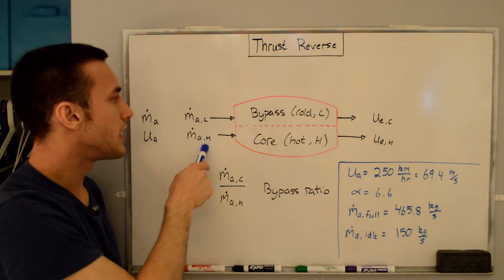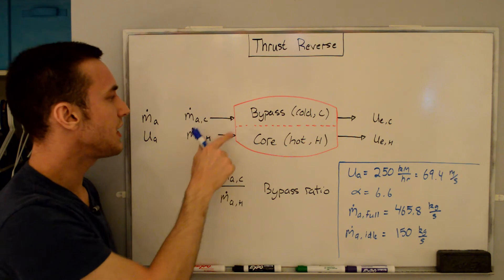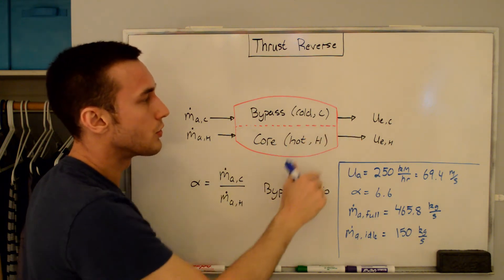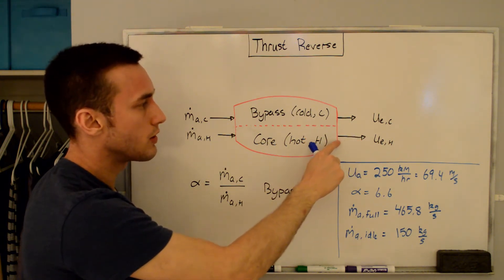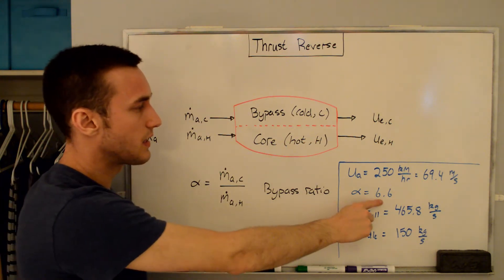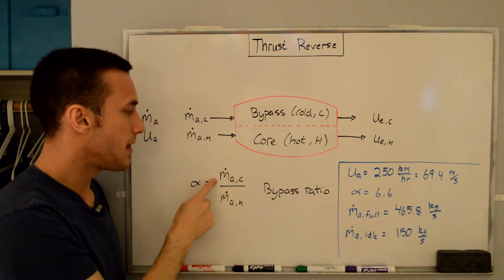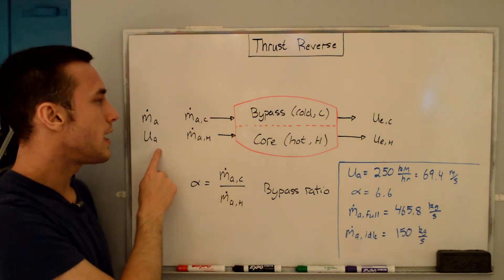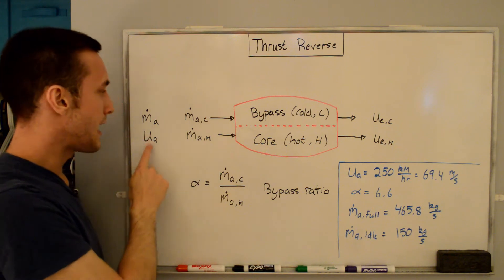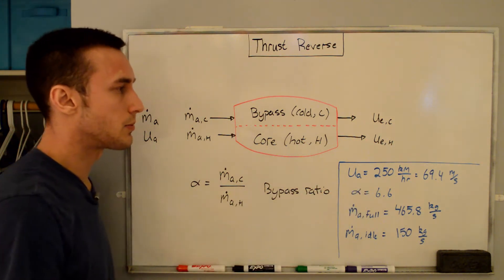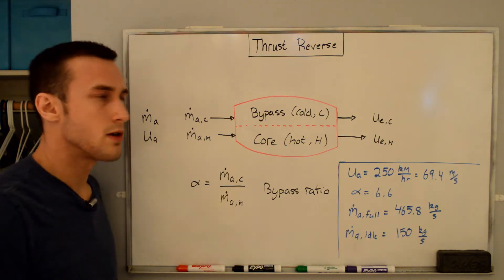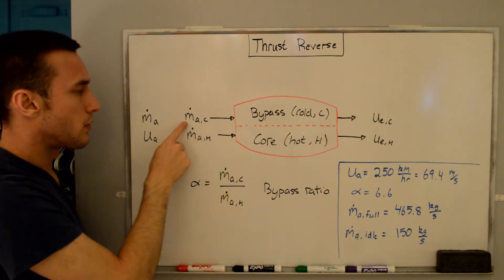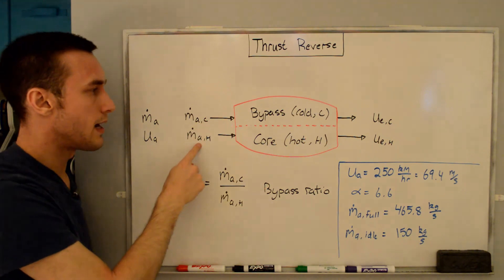Coming into the engine we have the mass flow rate of the air going through the bypass and the mass flow rate through the core. On the outlet we have the exit velocity of the bypass (cold) stream and the exit velocity of the core (hot) stream. The engine has a bypass ratio alpha of 6.6, defined as the mass flow rate through the bypass divided by the mass flow rate through the core. The last variable is M_A, the total air mass flow rate into the engine, equal to the bypass plus core mass flow rates.